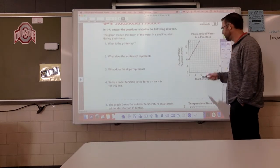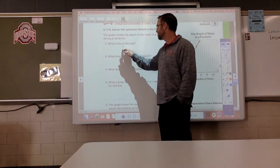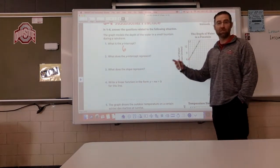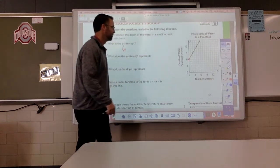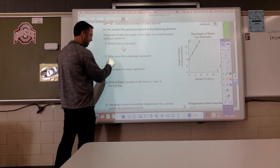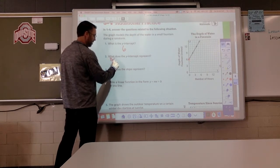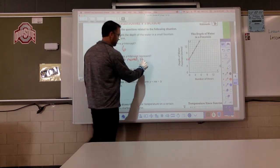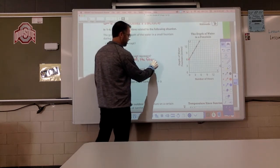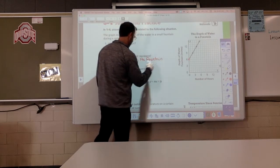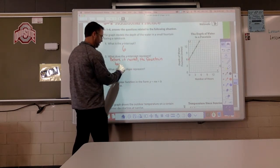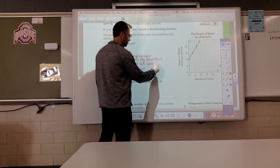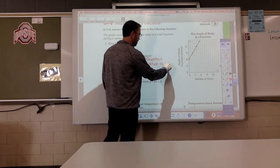What is the y-intercept? Well, that y-intercept right there, 6. Now, what does that mean about the fountain? Okay, before it started raining, there were how many inches of water? 6. So before it rained, the fountain had 6 inches of water in it.